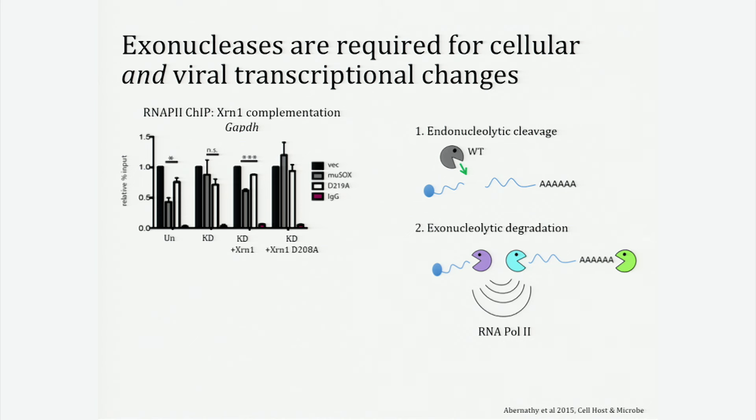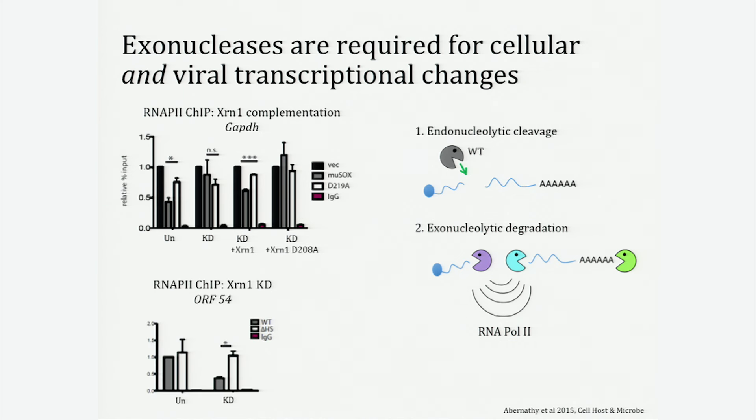How could these exonucleases be involved in mediating what we're seeing at viral genes? We used the same cell line to knock down XRN1, and we see that during a wild-type infection, the levels of RNA Pol II are significantly decreased compared to delta HS. So before, when we saw that viral genes were able to escape repression, they're unable to do that without XRN1. XRN1 is playing a critical role for both viral and cellular genes. In data I'm unable to show you today, we see the same thing for the other exonucleases involved in degrading the cleavage products of Musox.